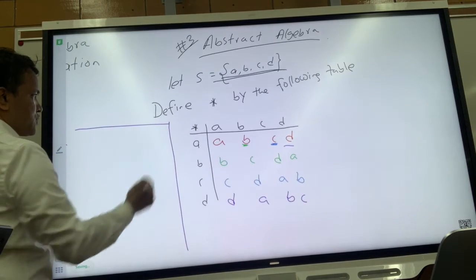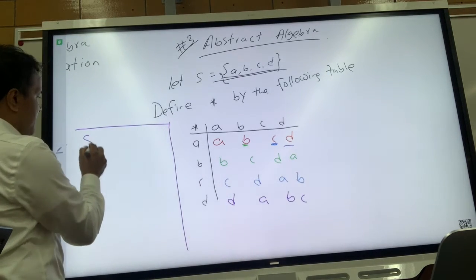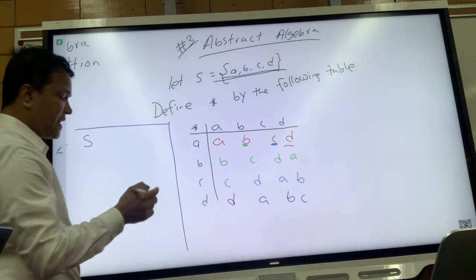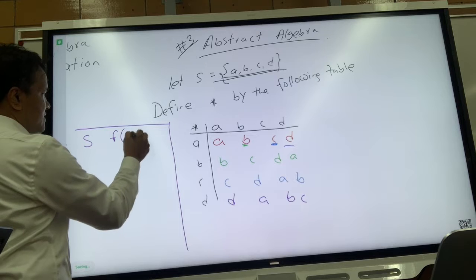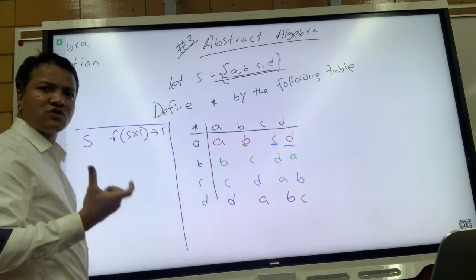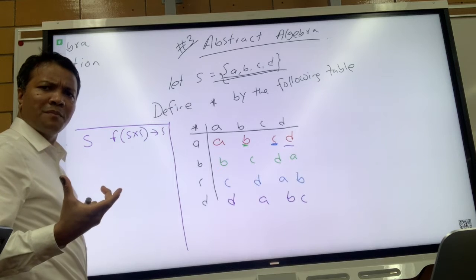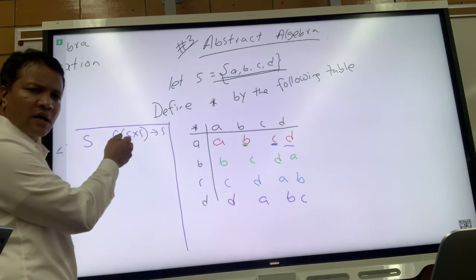The definition of a binary operation: a binary operation is a function for set S, and there's a Cartesian product S cross S which is mapped to only one element S, and that element has to be within this set.